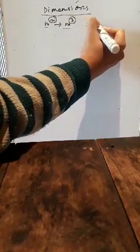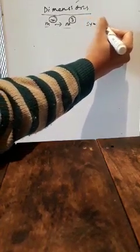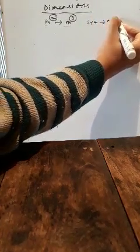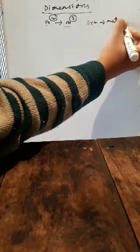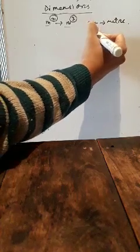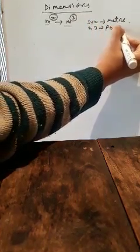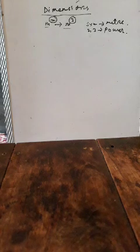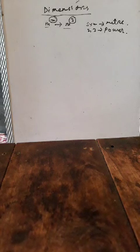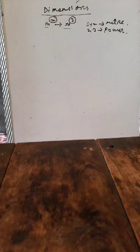That means the symbol is meter, and 2 and 3 are your powers or the index of the symbol m. So, dimension is the power or the index of the symbol of each of the fundamental physical quantities present in a derived physical quantity.